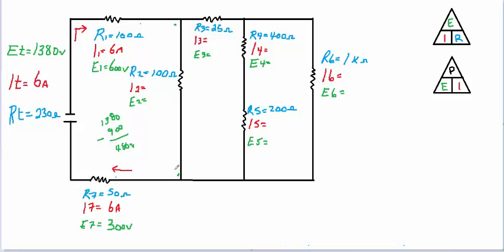From this point to this point, I must have 480 volts. I can find the current through resistor 2 using Ohm's Law: I2 equals E2 over R2, so 480 divided by 100 ohms is 4.8 amps flowing through there. I started with 6 amps at this node, and 4.8 amps went through R2, so the difference — 1.2 amps — must go the other way. 6 minus 4.8 equals 1.2 amps.